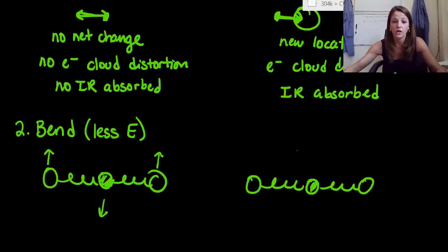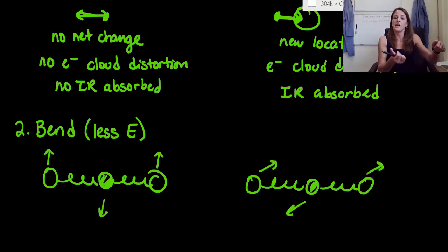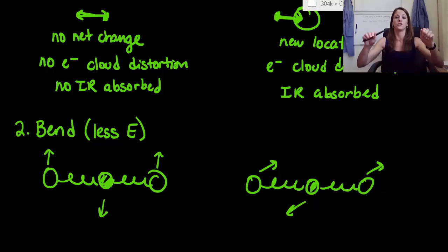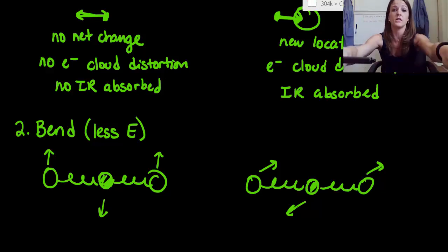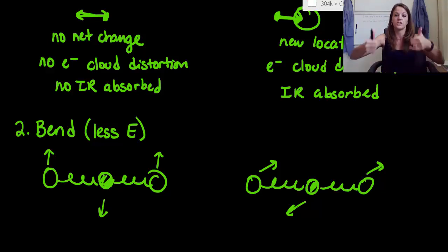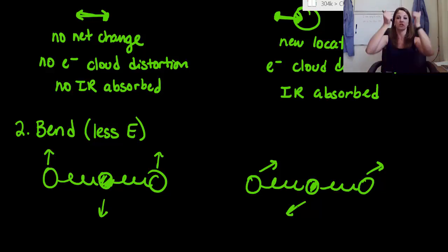For the other bend, we draw the oxygens at an angle going in the opposite direction. The oxygens are going into the page — they're going away from you — whereas the carbon sitting right here is coming out of the page toward me. So in your mind you need to think: oxygens into the page, carbon out of the page. These diagrams show four different directions.